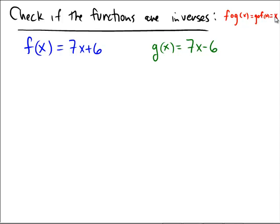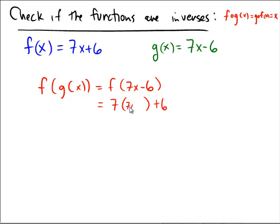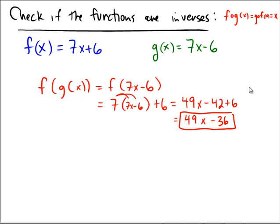Notice one of them is being subtracted and the other one's being added, so maybe they cancel each other out. What is f of g of x? That would be f of the g of x, which is 7x minus 6. The f takes something, multiplies it by 7 and adds 6, so it's going to take the 7x minus 6, multiply by 7, and then add 6. Distributive property: 49x minus 42 plus 6, and finally 49x minus 36. Notice that this is not x as needed, so these are definitely not going to be inverses.